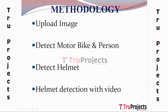The first module is Upload Image, where we upload images of vehicles with and without helmets. The second module is Detect Motorbike and Person — the uploaded image is processed using YOLO v2 to check whether the image contains a person with a motorbike. If YOLO detects both a person and a motorbike, we proceed to the third module: Detect Helmet, which uses YOLO v3 to detect whether the rider is wearing a helmet.